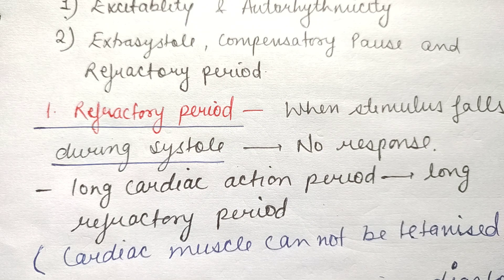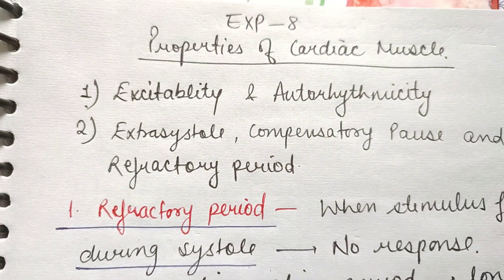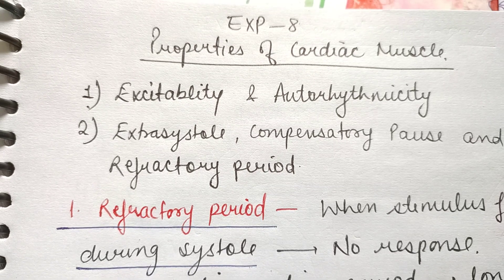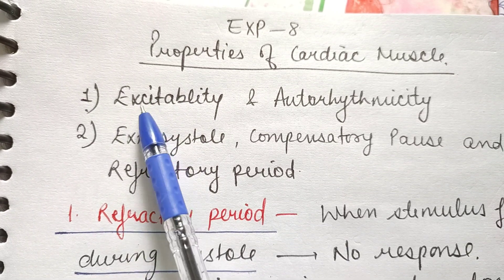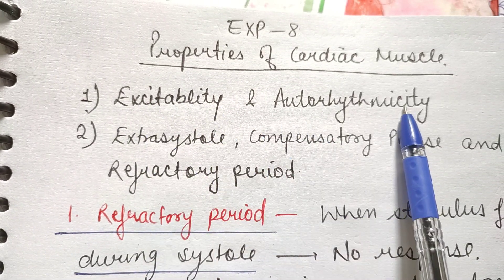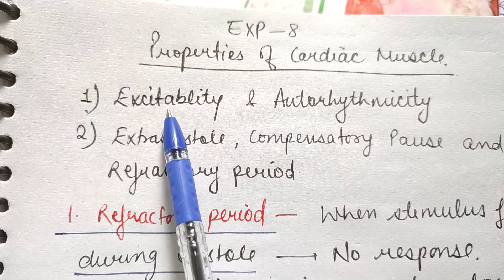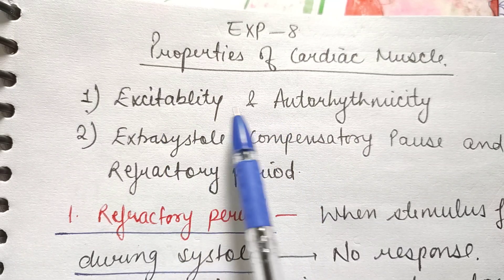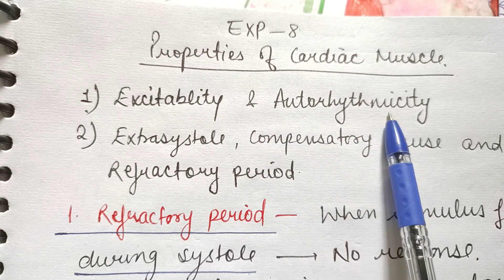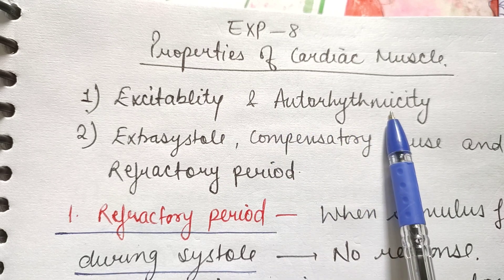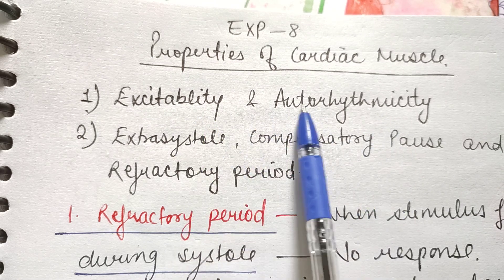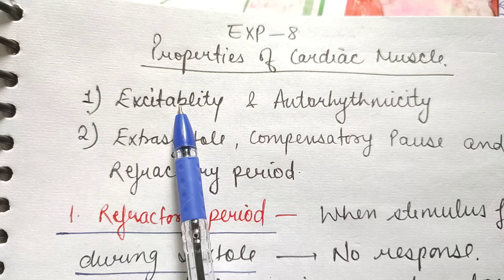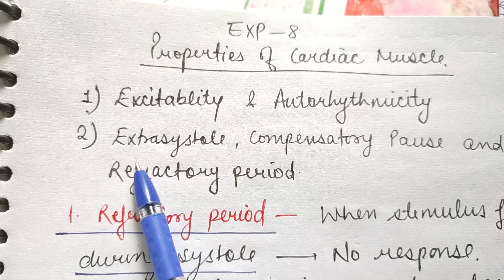Hello everyone, welcome to my channel. In this video we'll be talking about the next cardiac experiment of amphibian physiology — properties of cardiac muscle. We'll be doing excitability property and auto rhythmicity property. The tissue is able to generate its own rhythm; that is excitability. Maintaining that rhythm at regular intervals is auto rhythmicity. Both have been explained by normal cardiogram, which we covered in the last video. Here we'll be talking about some more properties.